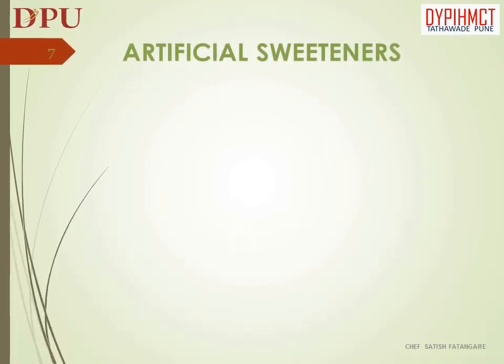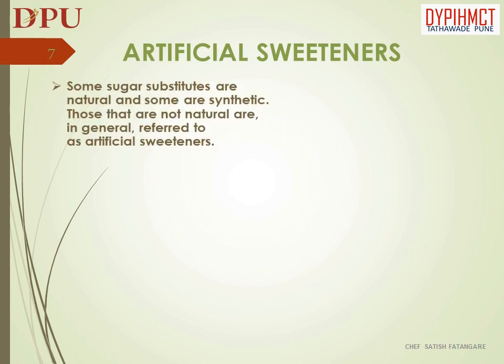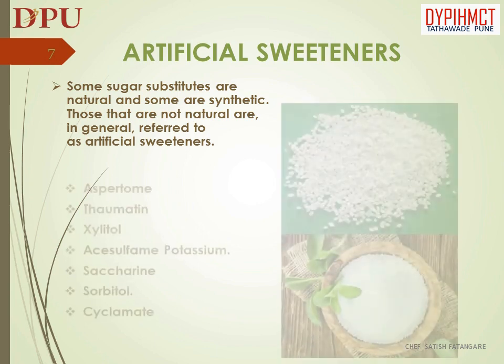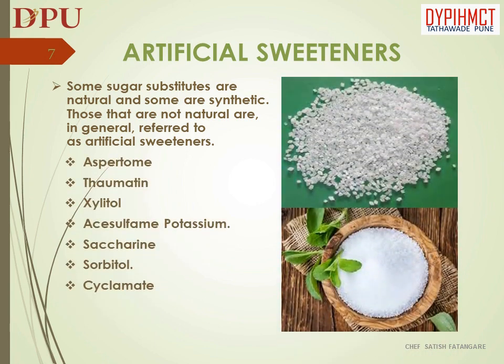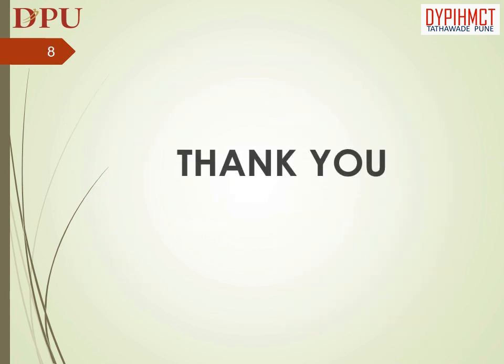In this slide we will discuss about artificial sweeteners. Some sugar substitutes are natural and some are synthetic. Those that are not natural are in general referred to as artificial sweeteners. Artificial sweeteners include: Aspartame, Thaumatin, Xylitol, Acesulfame Potassium, Saccharine, Sorbitol, and Cyclamate. Thank you.